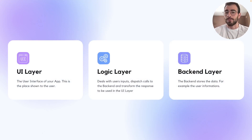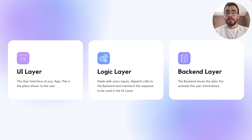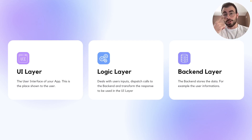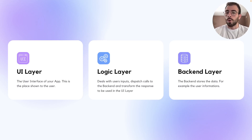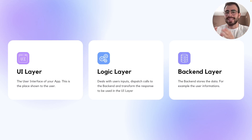You have the UI layer, which is the front end of your app — for instance, a login screen. You have the logic layer: when you press the login button on that login screen, the logic itself will say it needs to request from the database to see if it can log in this user. That's the logic layer — it's where you deal with user input and dispatch calls to different backend services and APIs. Then you have the backend layer, where you store all your data, such as the user data. You don't want the front-end code mixed in the same place as the logic code and the backend code.